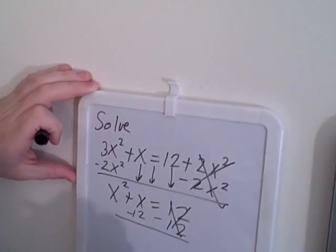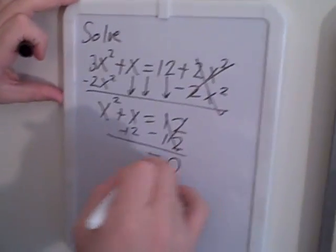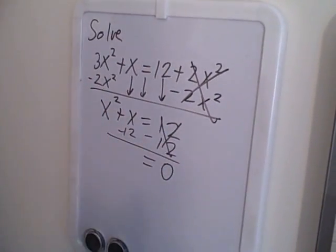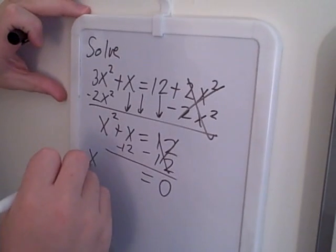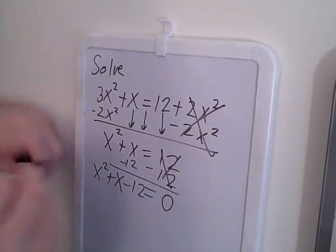These 12s cancel, and you're left with a 0. And on the left side you have no like terms, so it's just left with x squared plus x minus 12.